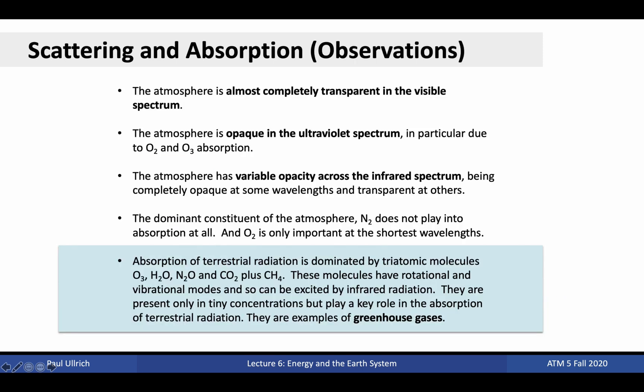In summary, the atmosphere is almost completely transparent in the visible spectrum. The atmosphere is opaque in the ultraviolet spectrum, in particular due to O2 and O3 absorption. The atmosphere has variable opacity across the infrared spectrum, being completely opaque at some wavelengths and transparent at others. The dominant constituents of the atmosphere, namely nitrogen gas and oxygen gas, do not generally play a role in absorption except in those shortest wavelengths where oxygen absorbs some of the incoming radiation.